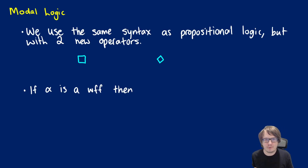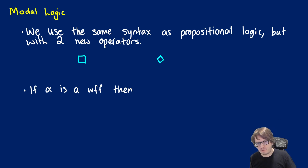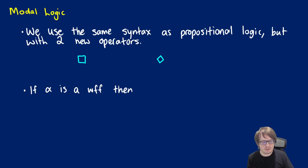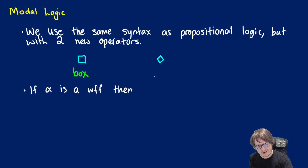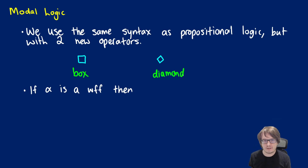We're going to start modal logic and talk about a couple of natural deductive rules. With modal logic we're going to use the same syntax as propositional logic and predicate logic, but we're going to add two new operators. These are respectively called box and diamond, and they work a lot like for-all and there-exists.